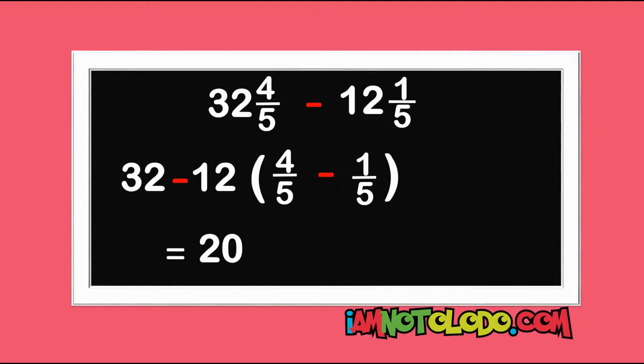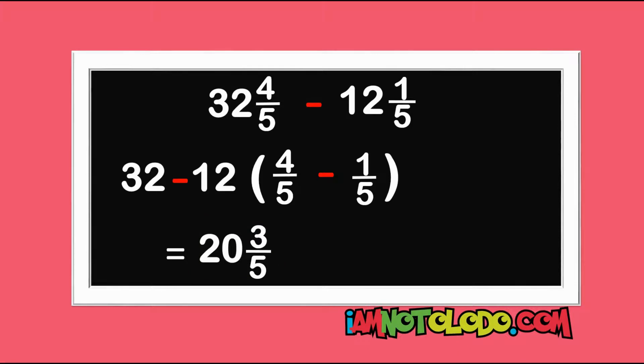Next step: the denominators are the same, so we are not going to touch it. All we have to do is work on our numerator. 4 minus 1 is 3 over our 5. This is our final answer. Did you get it right? Good.